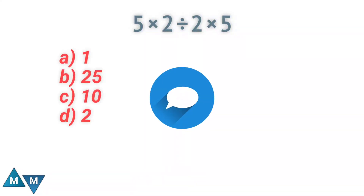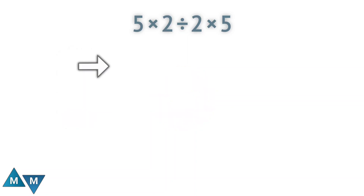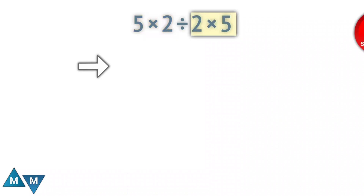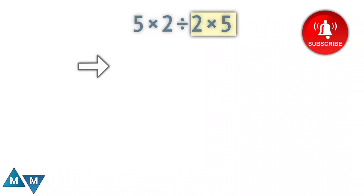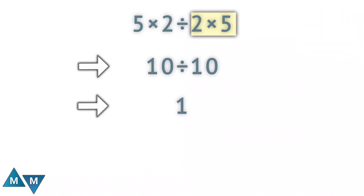Which of the following options is correct? We've seen a lot of people do it in the following way. Look at: 5 times 2 is 10, and 2 times 5 also gives 10. So it becomes 10 divided by 10, which equals 1. The answer in this case would be 1 — but this is wrong. This is the wrong way to solve it.